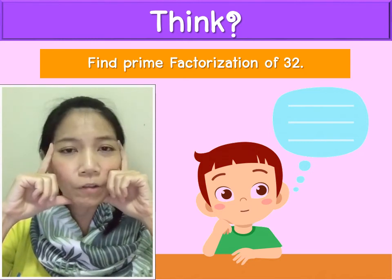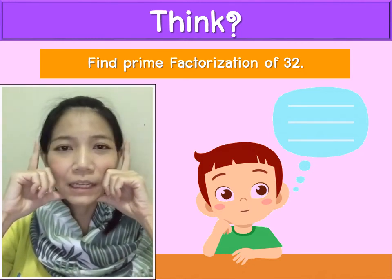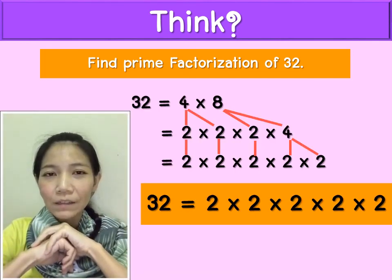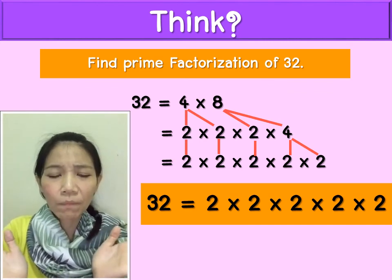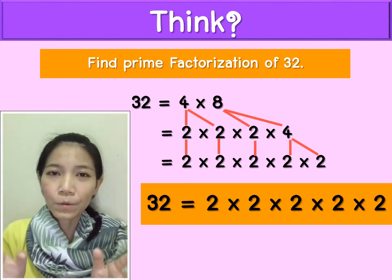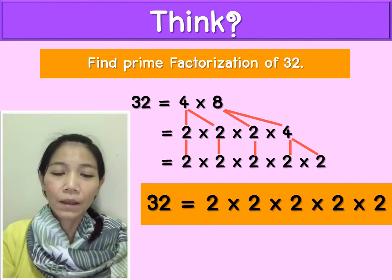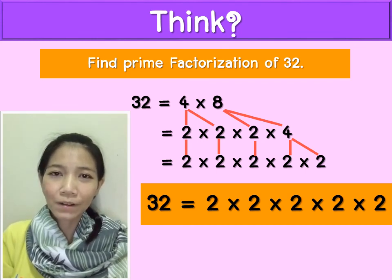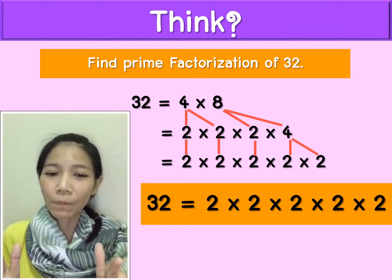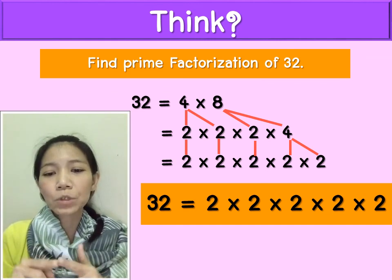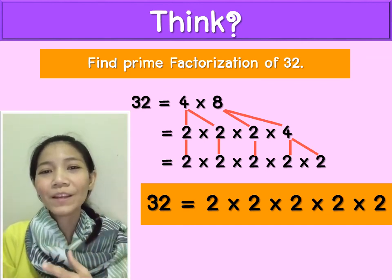32 starts from 4 times 8, but you cannot stop because 4 and 8 are not prime numbers. So you break it down: 2 times 2 times 2 times 2 times 2 — now you can stop because all numbers are prime. So 32 equals 2 times 2 times 2 times 2 times 2. Correct, very good!